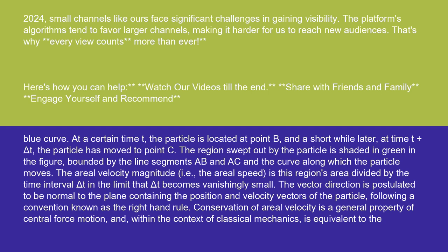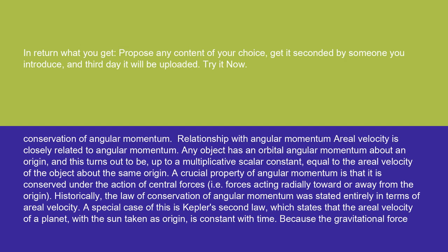The vector direction is postulated to be normal to the plane containing the position and velocity vectors of the particle, following a convention known as the right-hand rule. Conservation of aerial velocity is a general property of central force motion, and within the context of classical mechanics, is equivalent to the conservation of angular momentum.